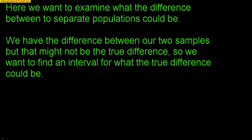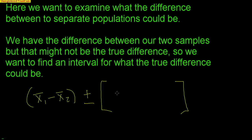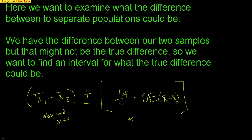How do you find an interval? We're going to have an observed difference — a difference between sample one and sample two — and then we're going to plus and minus our margin of error. A margin of error is going to be T-star times a standard error for the difference, which is a slightly different formula we'll talk about in a moment. The idea of a confidence interval is exactly the same: we have an observed difference, and then we plus or minus our margin of error, which is T-star multiplied by the standard error.